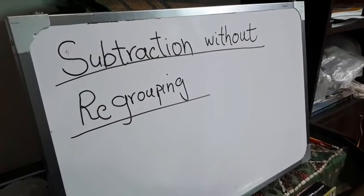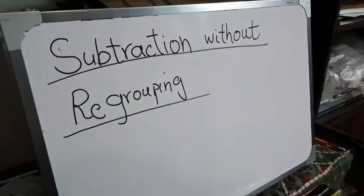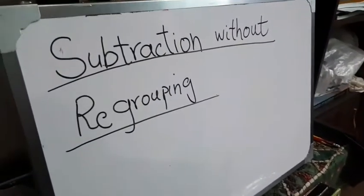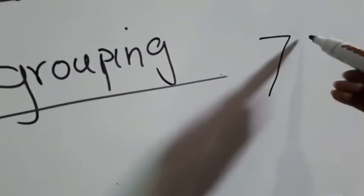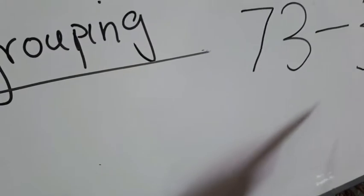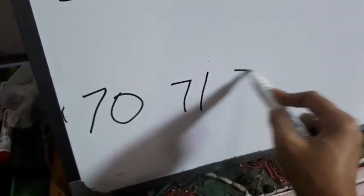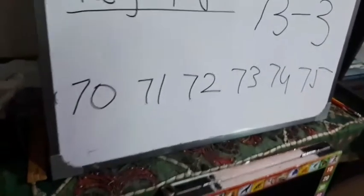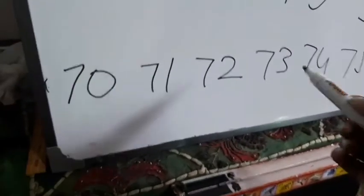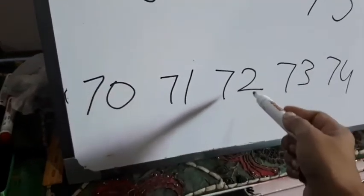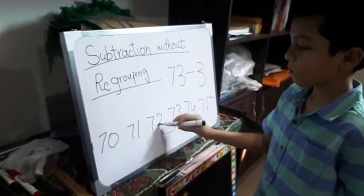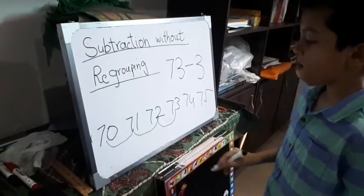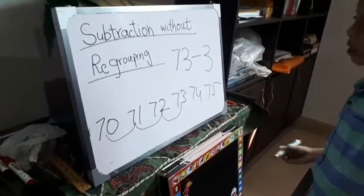Today we will learn about subtraction without regrouping. Let's talk about Method 1. Let's suppose 73 minus 3. We will use backward counting — from 73, we step back three steps. So what is the answer? 70.